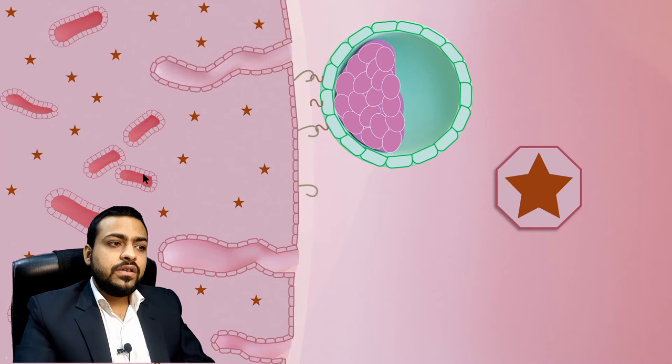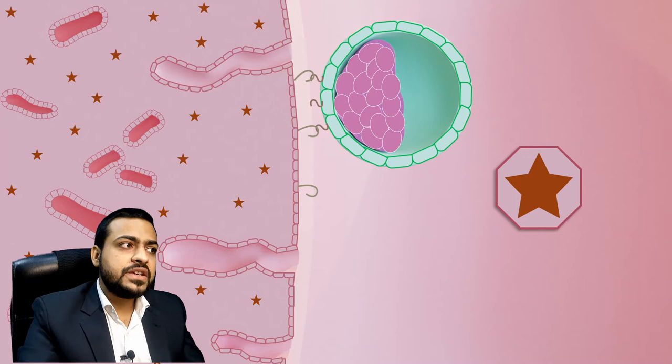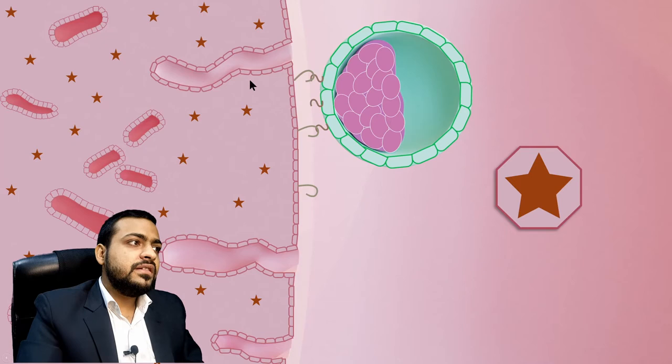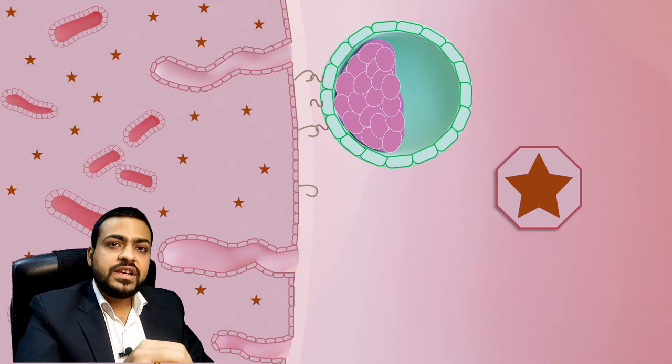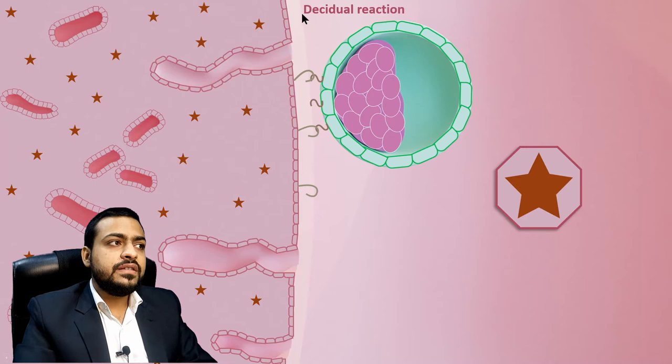This process and reaction becomes more marked and more pronounced as implantation occurs. With the touch of the embryo on the endometrium, this reaction becomes more pronounced especially at the site of implantation, and then this pronounced reaction spreads generally to the whole of the endometrium. This is called the decidual reaction.